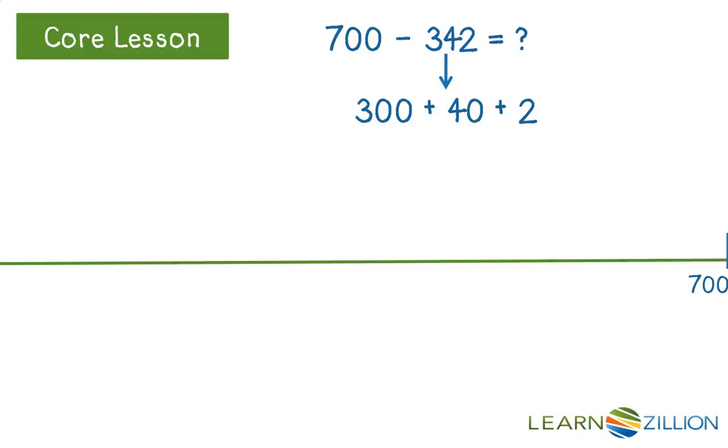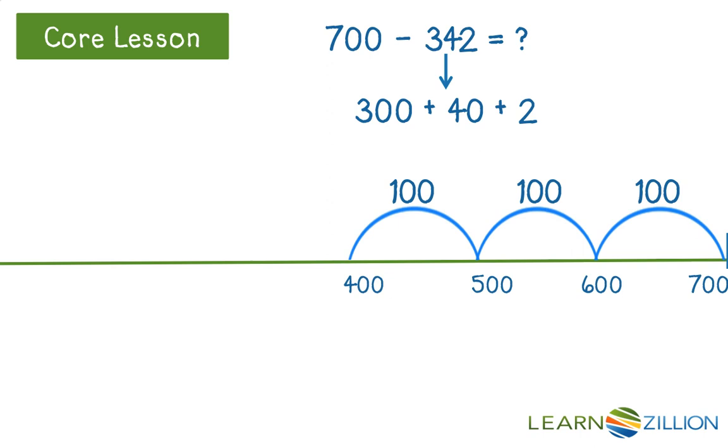So I see there are three hundreds, so I'm going to make three hundreds jumps. So, 600, remember it's backwards because we're subtracting. Another hundred makes 500, and taking away another hundred makes 400.